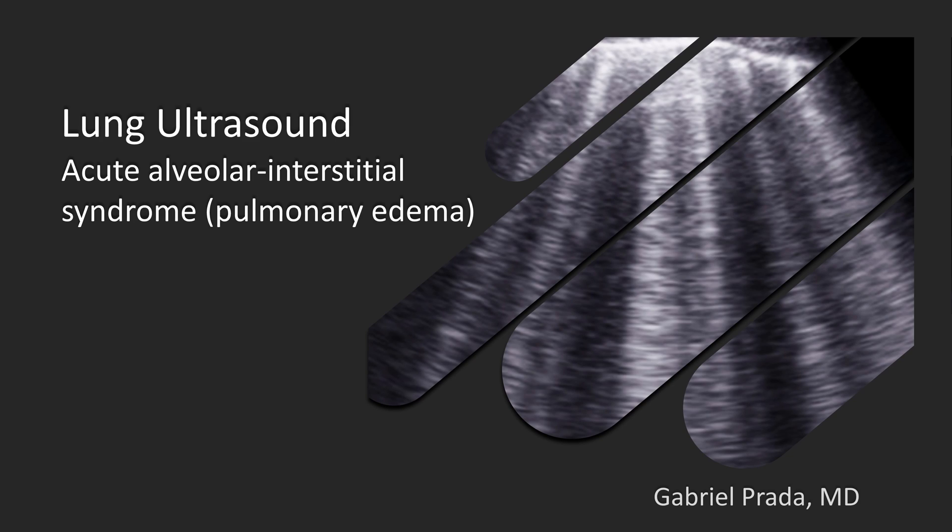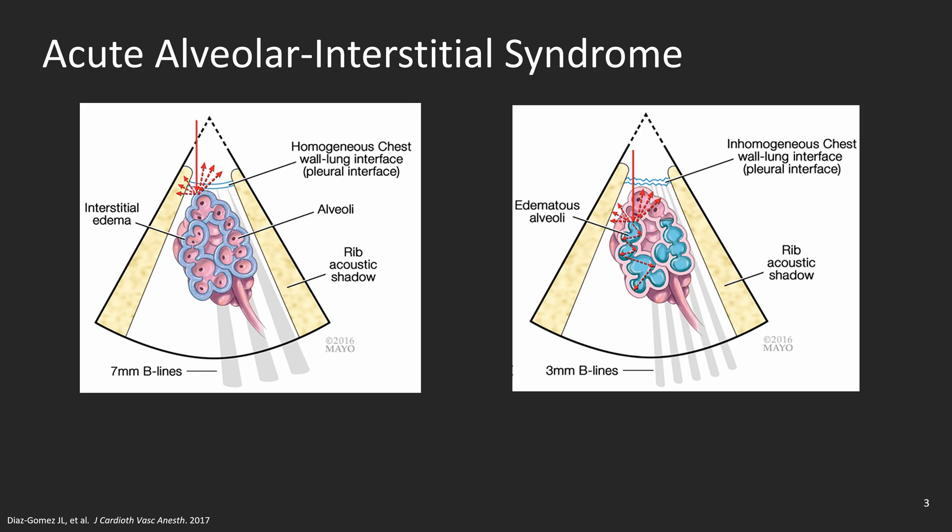Hello and welcome back to the ICU doc. This is Gabriel Prada and here is a quick lecture about lung ultrasound for acute alveolar interstitial syndrome, which includes the concept of pulmonary edema. The acute alveolar interstitial syndrome includes conditions with bilateral diffuse peripheral involvement of the interstitium and the alveolocapillary membrane that leads to hypoxemia and different degrees of respiratory failure.